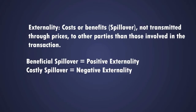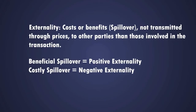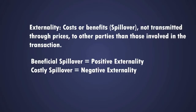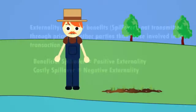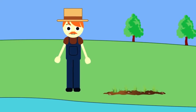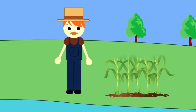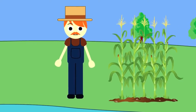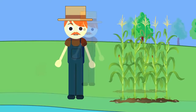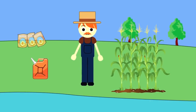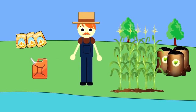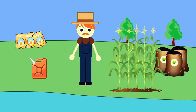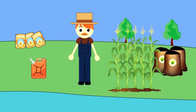Let's talk about negative externalities for a minute. Imagine being a corn farmer and growing corn. What are the private costs that you face that help you determine how many ears of corn to grow? Things like fuel, seed, fertilizer. These are your private costs.